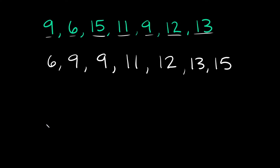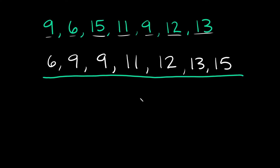Now out of the four things we're going to find — the mean, median, mode, and range — the mean takes the most work. Finding the median, mode, and range is actually pretty easy. So how do you find the mean? It's the same thing as finding the average. Mean is just another word for average. All you have to do is add all the numbers up to get a total, and then divide that total by however many numbers you have. We have 7 numbers, so we're going to divide by 7.